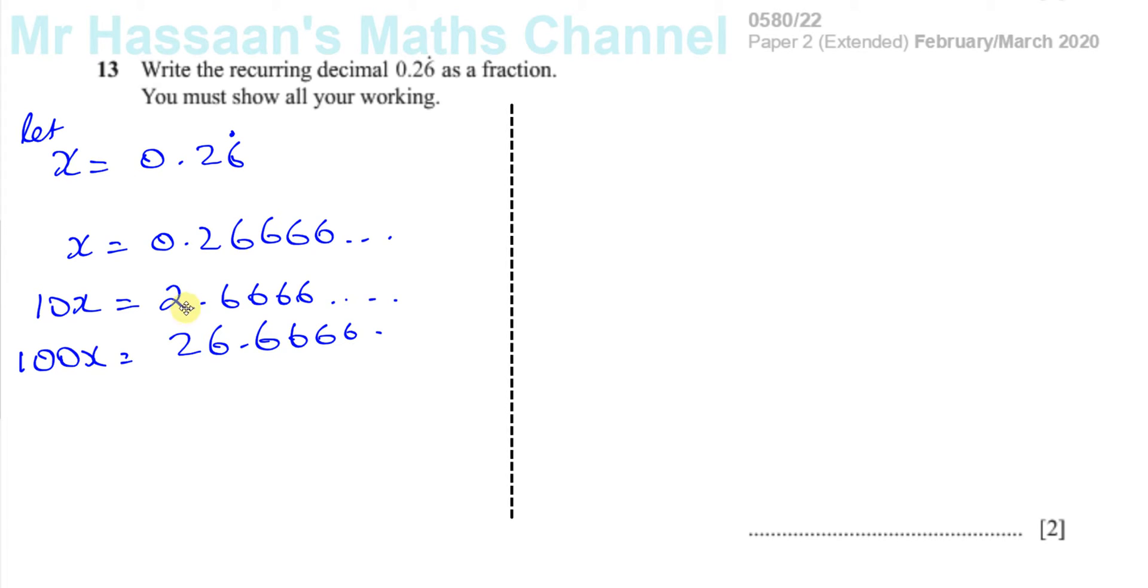So that means, let me just put this over here a little bit so you can see. That means, basically, let's call this equation 1 and equation 2. If I were to subtract these two equations, I'll have 100x minus 10x, which is 90x.